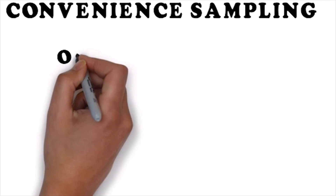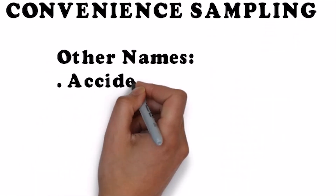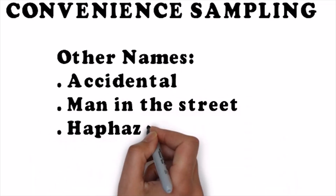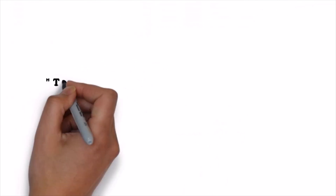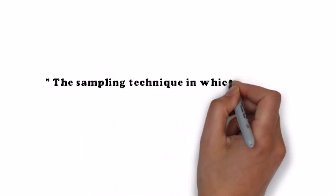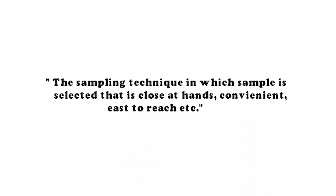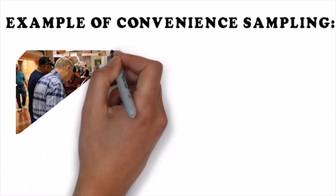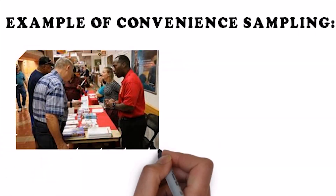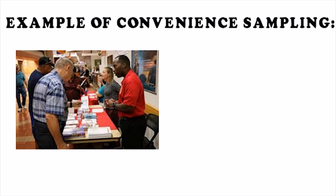Convenience sampling is also known as accidental, man-in-the-street, or haphazard sampling. In this technique, the sample is selected based on what is close at hand, convenient, and easy to reach. Researchers select whoever is easily accessible. For example, we have seen that in malls, companies lay out pamphlets and ask people on-site questions — this is convenience sampling.